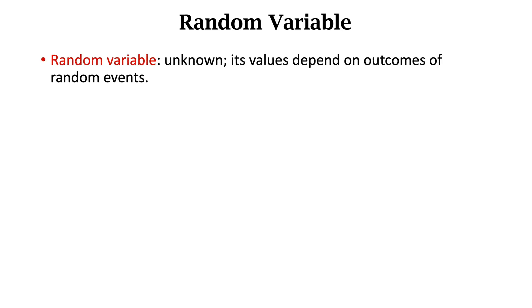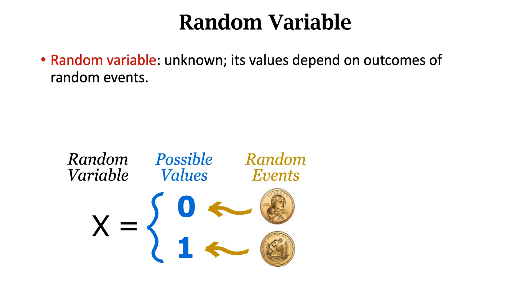The first concept is random variable. It is unknown and its value depends on the outcome of a random event. For example, I toss a coin. It is a random event and its outcome can be either head or tail.